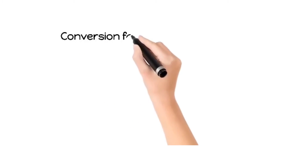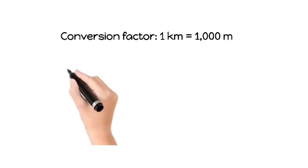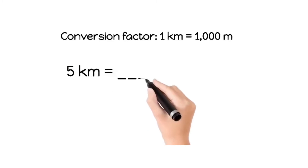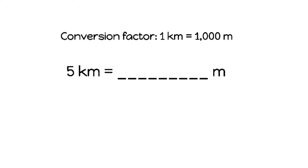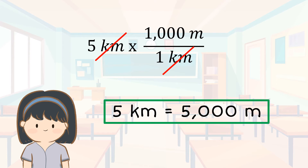Now, let's dive into some basic unit conversions. The key here is to know the relationships between units. For example, 1 kilometer equals 1,000 meters. So, to convert from kilometers to meters, you simply multiply by 1,000. Here's an example: if you have a distance of 5 kilometers, how many meters is that? You just multiply by 1,000 to make the conversion.